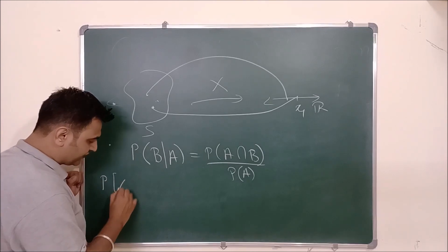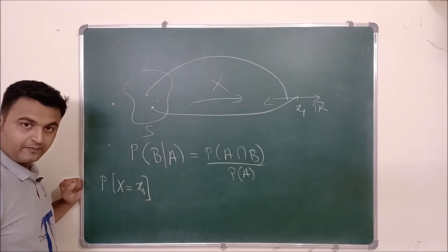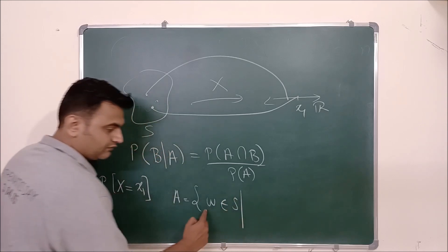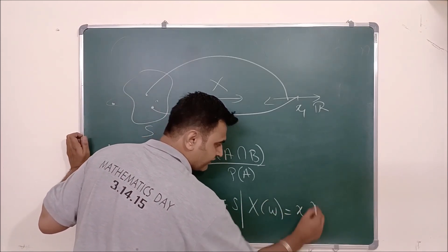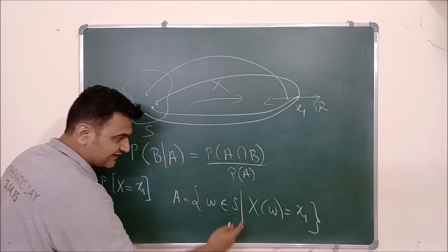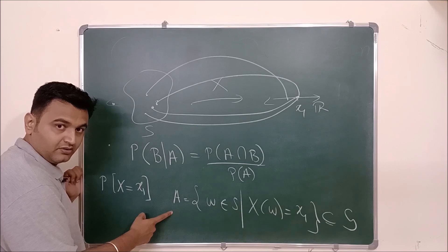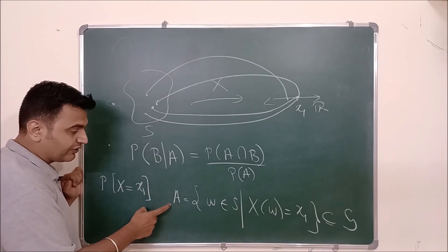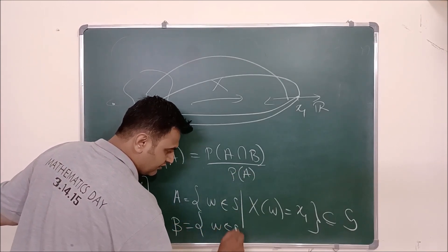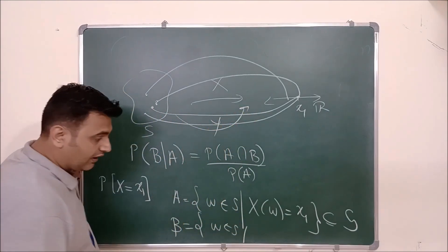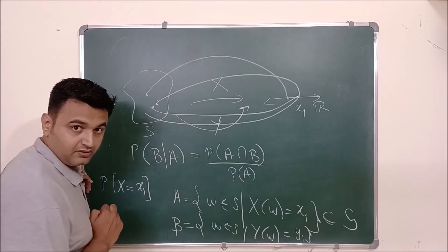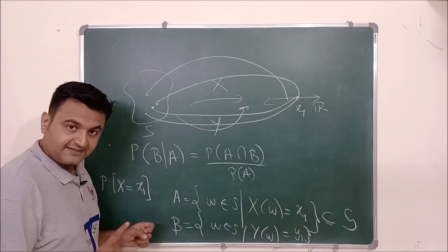If we want the probability that random variable X takes the value x₁, we define event A as the set of all outcomes whose image under X is x₁. This subset of the sample space is an event. Similarly, let B be the event of all outcomes whose image under random variable Y is y₁. Now we have two events from the same sample space S.